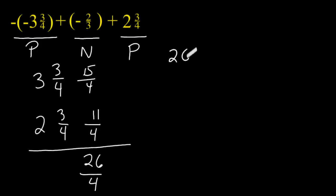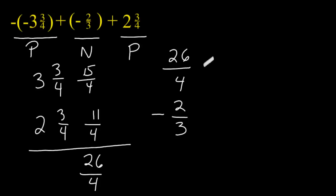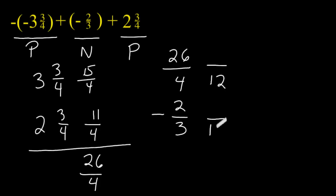Now we have to take 26 quarters and subtract negative 2 thirds. Remember, when you have signs that are different, you have to find the difference. So let's find a common denominator of 4 and 3, which would be 12. This denominator increased by a factor of 3, so the numerator must increase by a factor of 3 as well, giving us a result of 78.